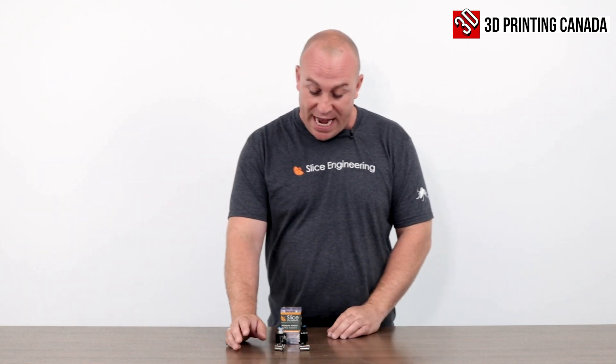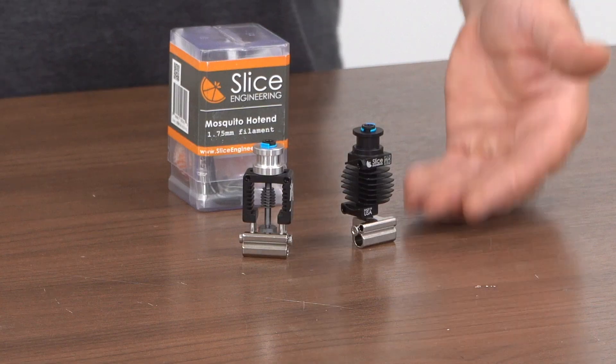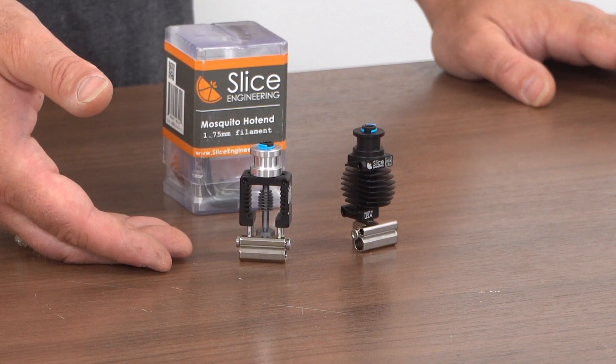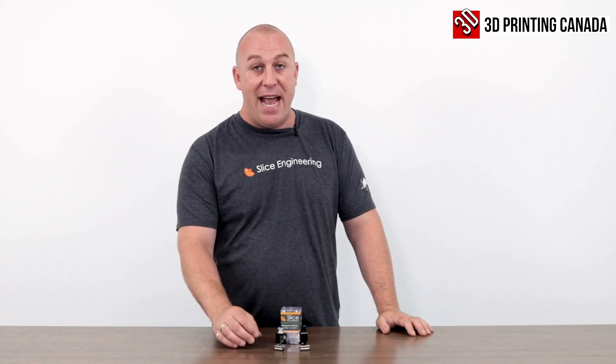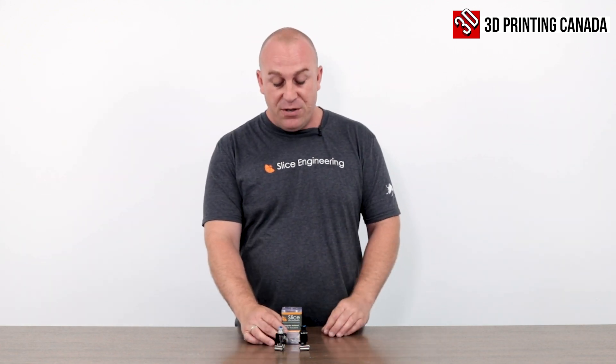Now taking a look at what we have in front of us, we have the Mosquito hot end and the Copperhead hot end. The Mosquito hot end is adaptable to a whole bunch of different heat breaks as well as their new Magnum High Flow. I don't have that in stock yet but we will be bringing those to you in further videos.